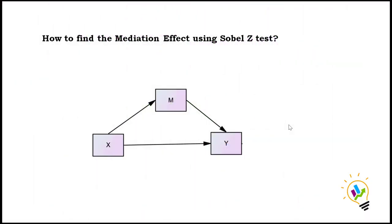Hello, welcome to my Easy Statistics. In this video I am going to discuss how to find the mediation effect using the Sobel z-test. The Sobel z-test is a very simple test through which we can find the significance of the mediating variable between the independent variable and the dependent variable.